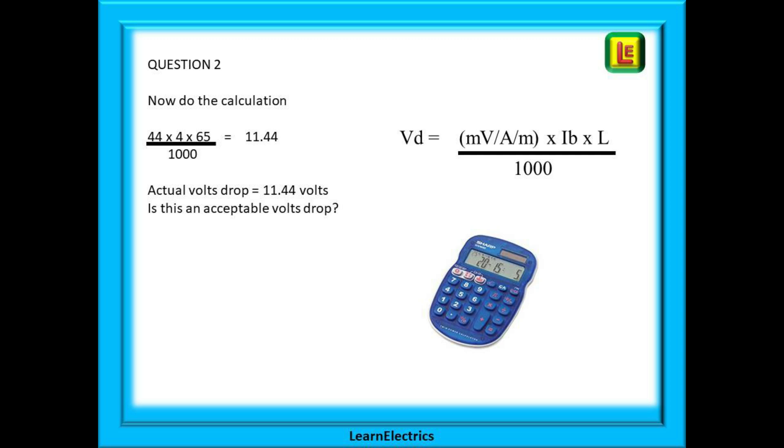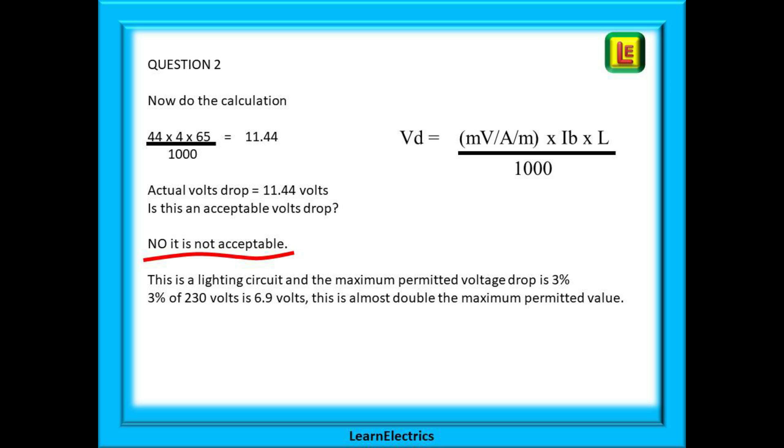44 multiplied by 4 multiplied by 65 and divided by a thousand equals 11.44. So the actual volts drop is 11.44 volts. And the second part of the question: is this an acceptable voltage drop, is it less than the permitted maximum? The answer is no, it is not acceptable. This is a lighting circuit and the maximum permitted volts drop is three percent or 6.9 volts. The actual volts drop is almost double the maximum permitted value. In the exam, always make sure of what type of circuit it is, and the question will always tell you.